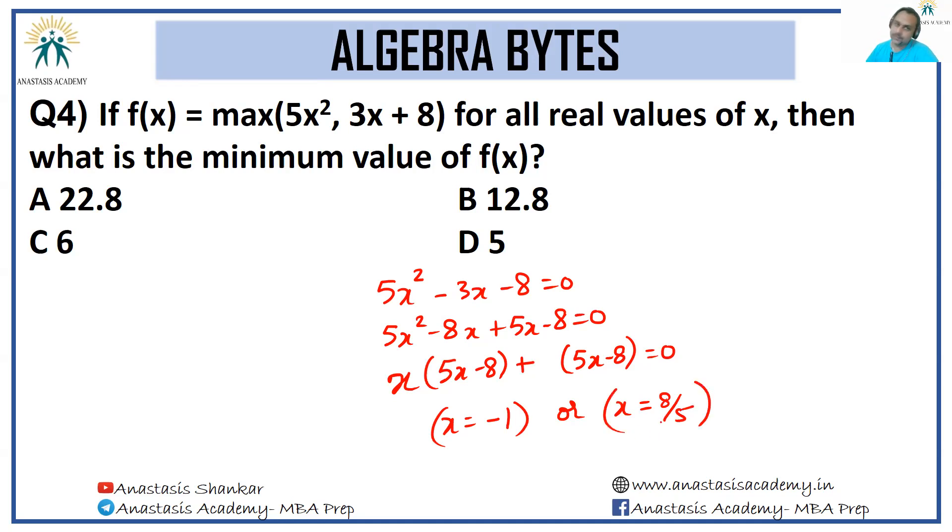We've got these two possible values of x. These are the points where the straight line and the parabola are intersecting. We have to look at the intersection points. When x = -1, the two expressions give me 5 and 5. When x = 8/5...